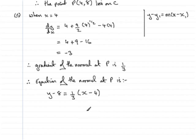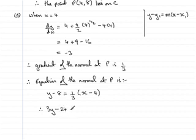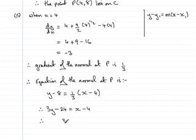To get it in the required form, it's better to multiply both sides by 3. That gives 3y minus 24 equals x minus 4. Then add 24 to both sides, and that gives 3y equals x plus 20. So there's your equation of the normal.